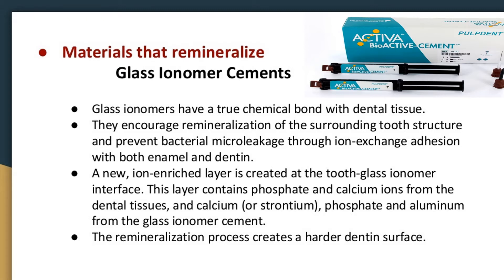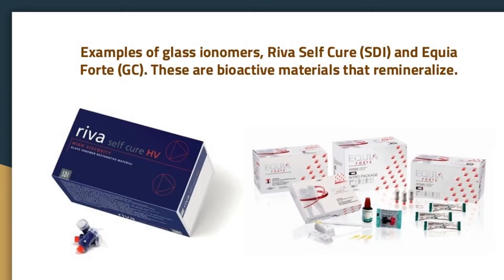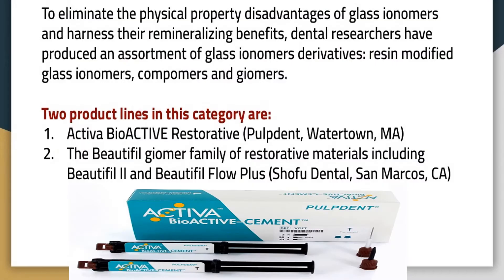The remineralization process creates a harder dentin surface. Examples of glass ionomers include Riva Self Cure (SDI) and Equia Forte (GC). Bioactive materials that remineralize include Activa Bioactive Restorative, Pulp Dent (a bioactive restorative material that remineralizes), and the Beautifil family — including Beautifil 2 and Beautifil Flow Plus (Shofu Dental) — all of which are bioactive restorative materials that remineralize.